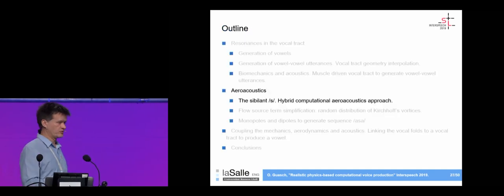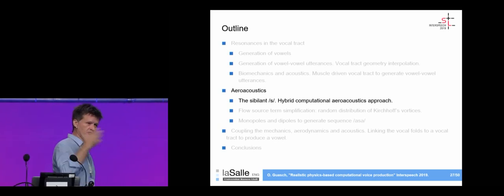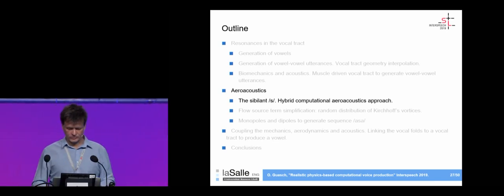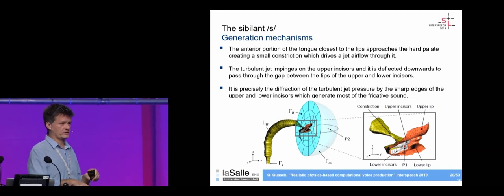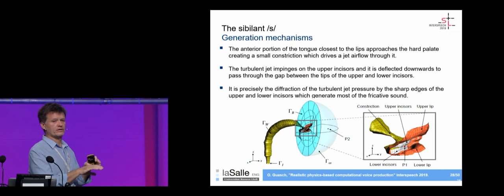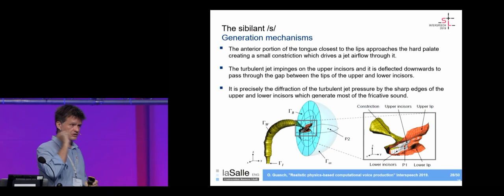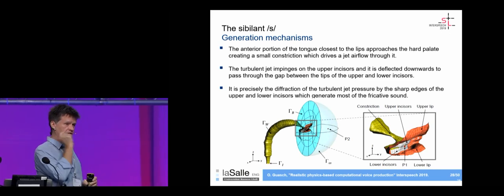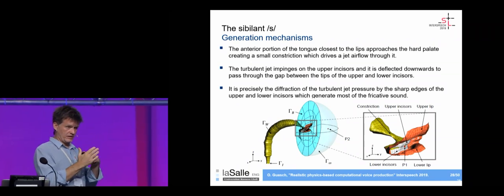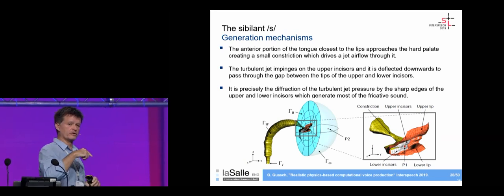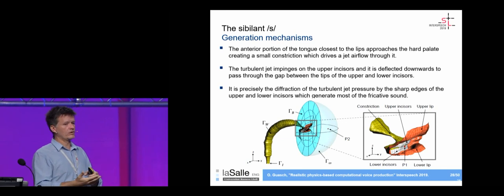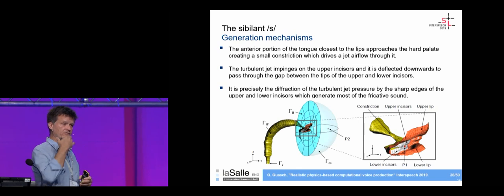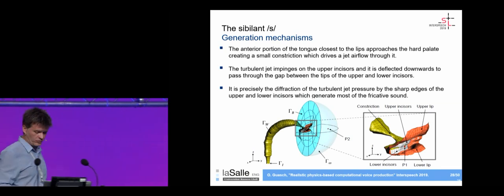We now move to aeroacoustics and the simulation of sounds like /s/. To generate /s/, the anterior portion of the tongue moves up toward the hard palate, strongly accelerating the airflow. The resulting jet passes through the gap between the incisors, generating vortices. These vortices are acoustic sources; they also impact the lower lip, producing additional sound that gets diffracted by the teeth. Each of these aeroacoustic phenomena contributes to the /s/ sound.